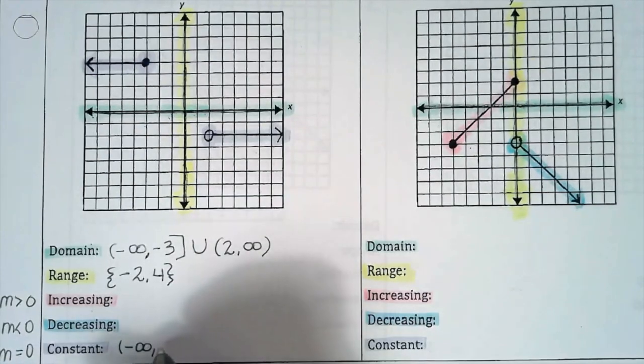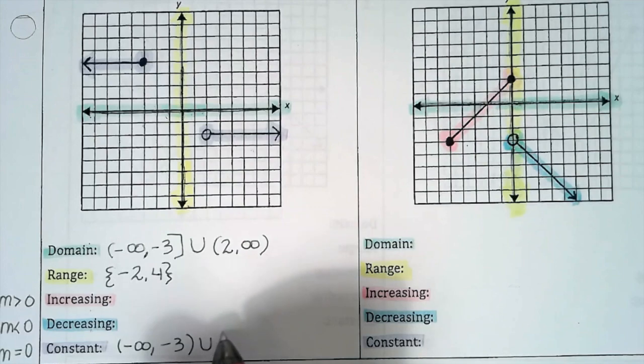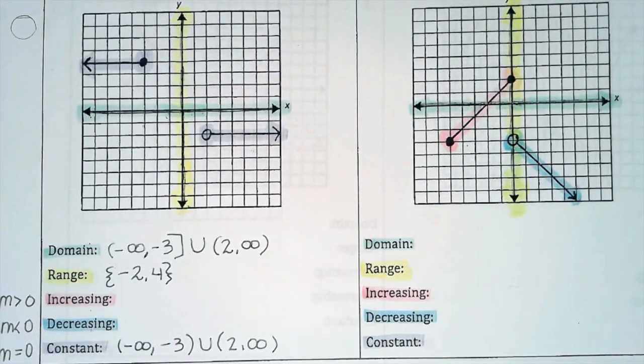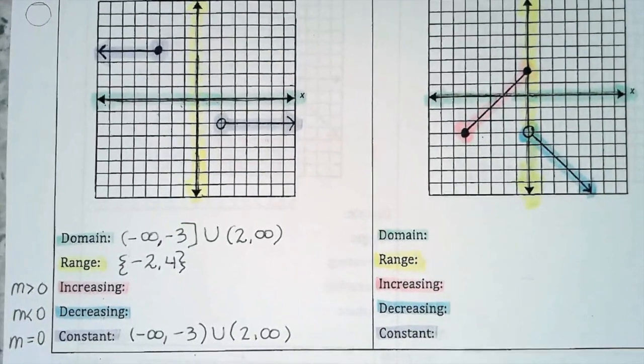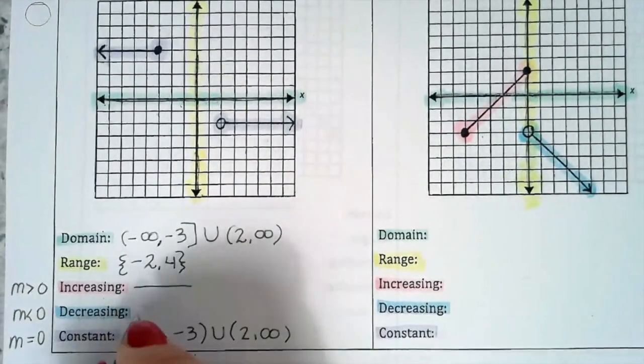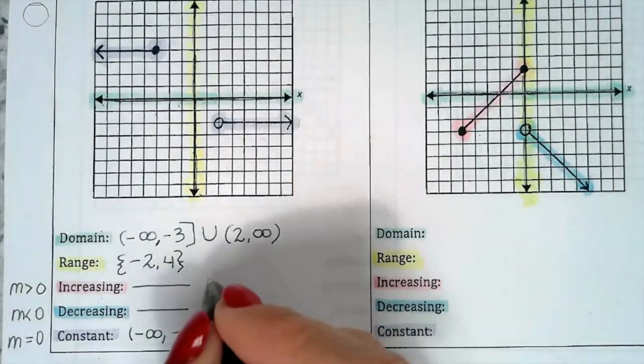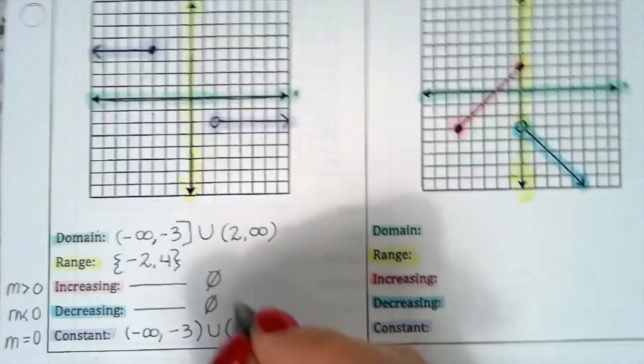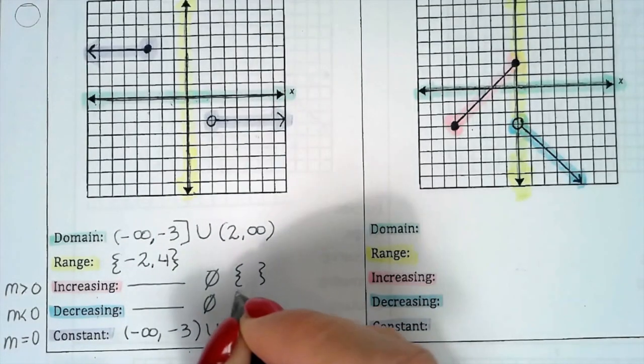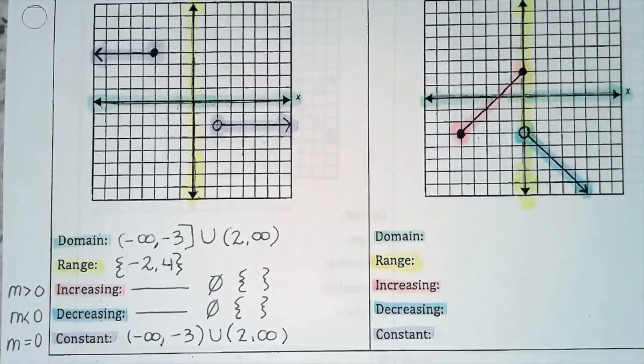So it goes until negative 3 with a parenthesis, union, and then we start at 2 until infinity. So almost the same as the domain, except we're not going to use any square brackets. And really, that's it. If you want to really show that there's no answer to this, draw a line. If you want to say something like the empty set, or really draw an empty set with nothing in it, I guess you could, but you could just leave it blank.